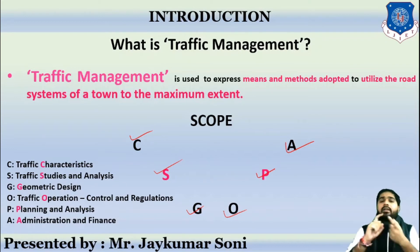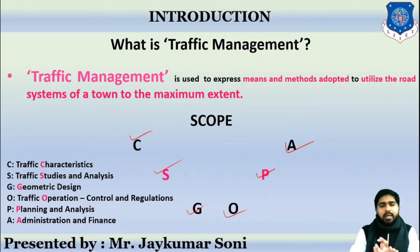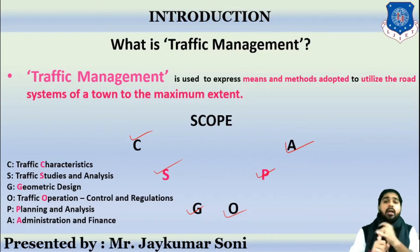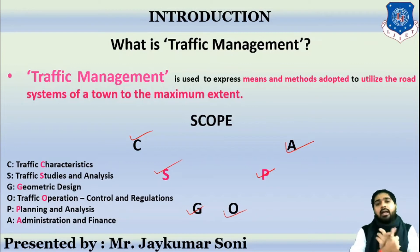CSGOPA stands for: C — Traffic Characteristics, S — Traffic Studies, G — Geometric Design, O — Operational Control and Regulation of Traffic, P — Planning and Analysis, and A — Administration and Finance.